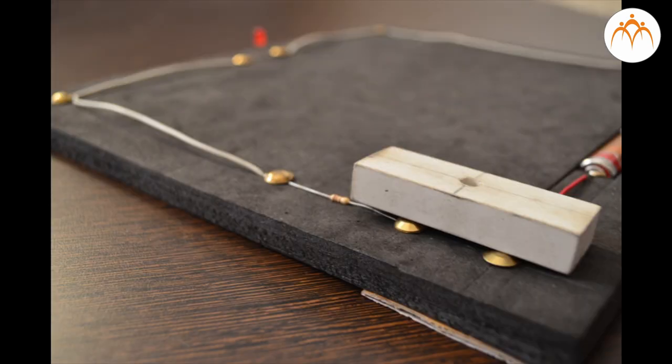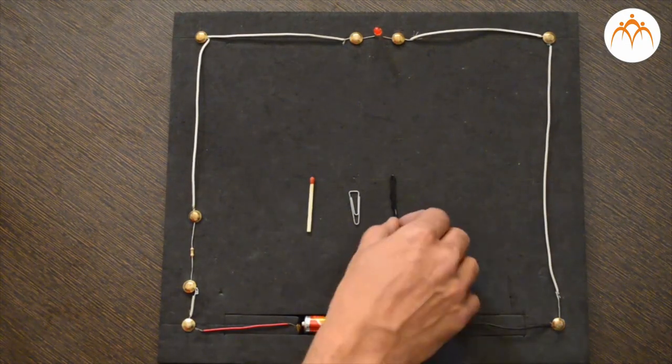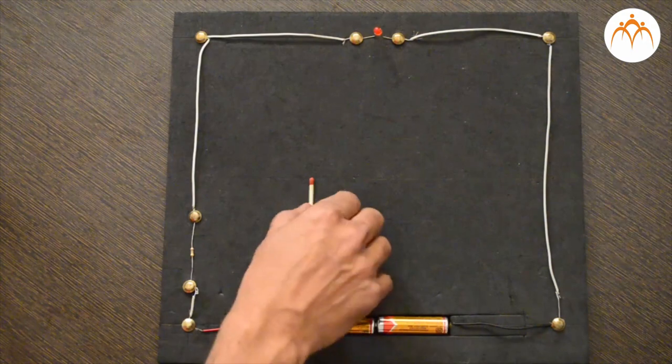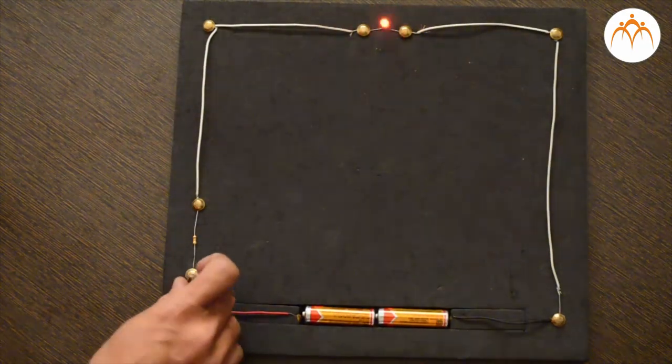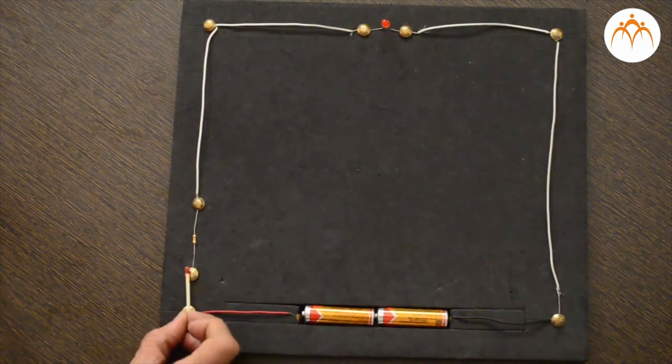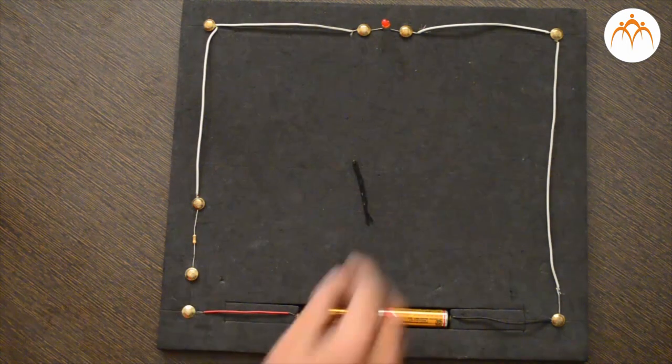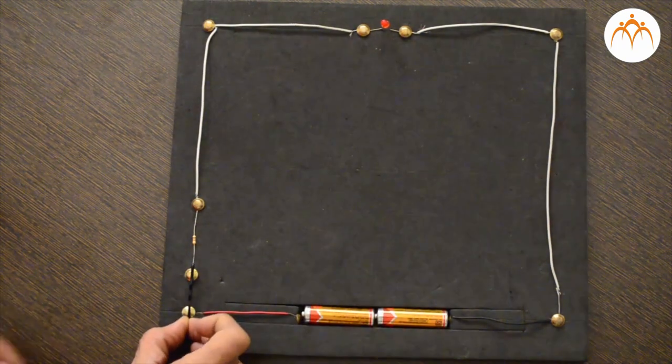A lighted LED indicates that the material is a conductor. A U-pin is metallic and a good conductor of electricity, while matchstick, hairpin made from plastic, and eraser are bad conductors of electricity. Try with different materials around you.